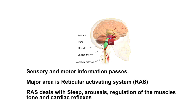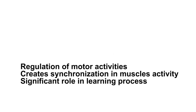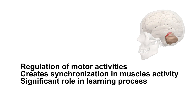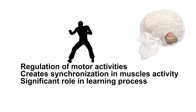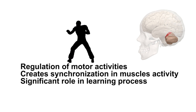Behind the medulla and pons, there is a structure called the cerebellum. The cerebellum is the part of the brain concerned with the regulation of motor activities. It creates synchronization in muscles, through which muscles complete target actions. It also plays a significant role in the learning process.